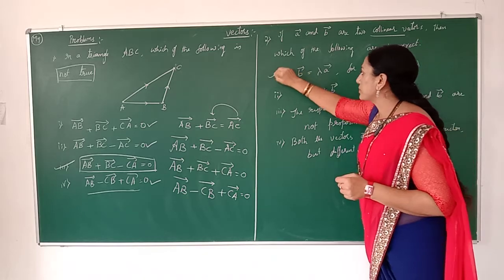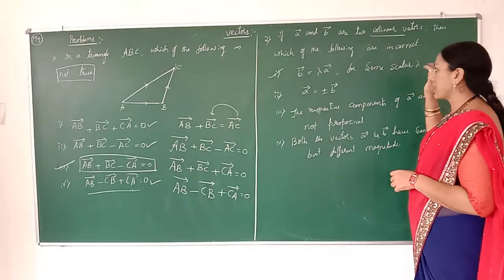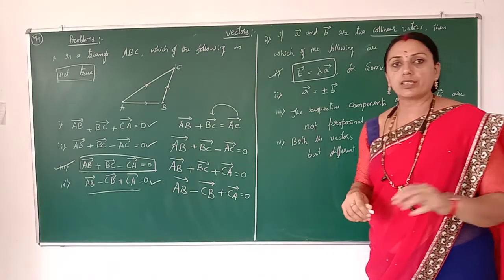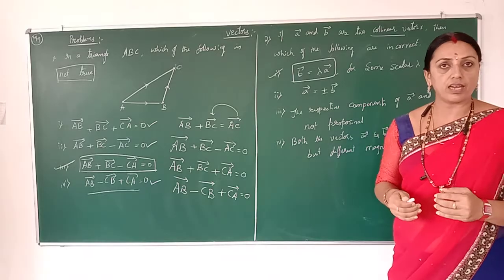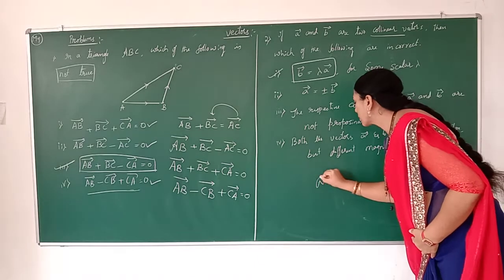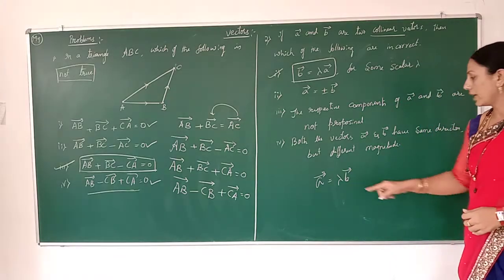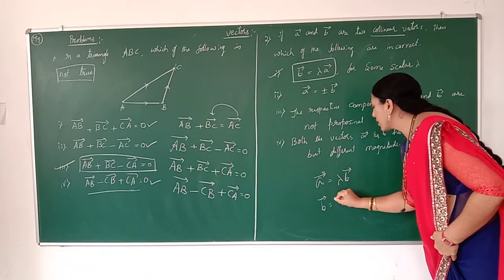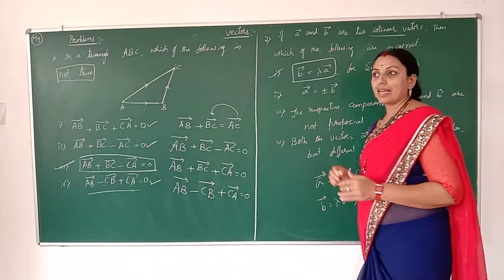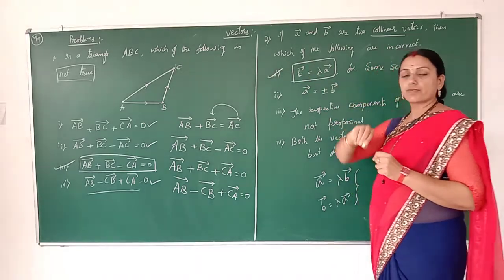We verify the definition. First: vector B equals lambda times vector A, where lambda is a scalar — this is a definition of collinear. In previous classes we discussed verifying whether given vectors are collinear. If any two vectors are collinear, one vector equals lambda times the other. So the first result is true.